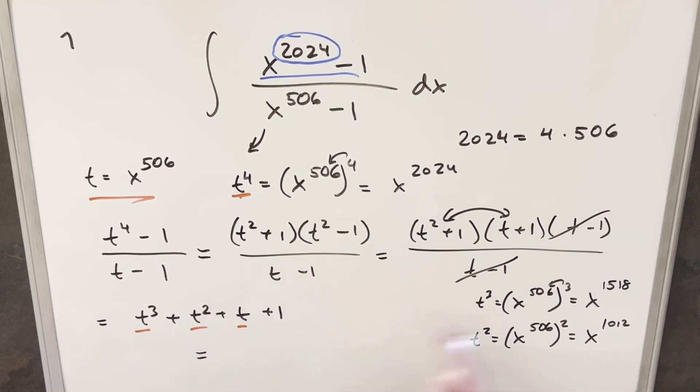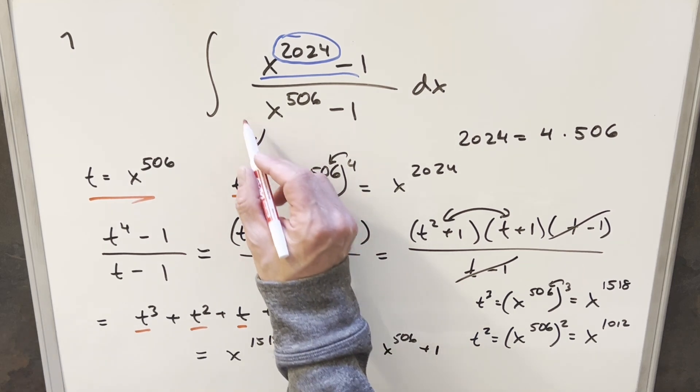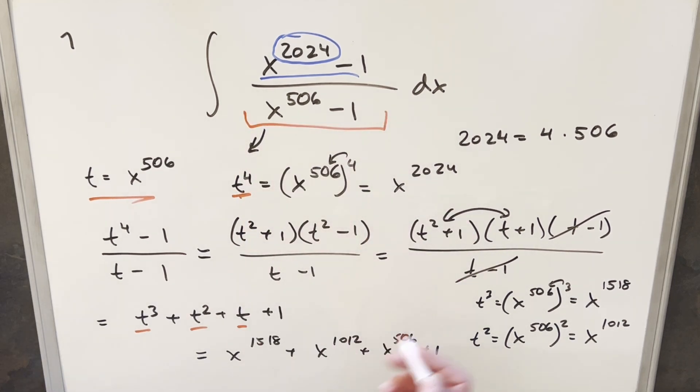So then putting everything back, for t cubed, we have our x to the 1518. Then for t squared, we have x to the 1012, plus x to the 506, and then just a plus 1 there. So what we've done is we just took our whole integral here, and we just reduced it to just a polynomial. So we'll just take this whole thing here and put it back into our integral and finish it off.